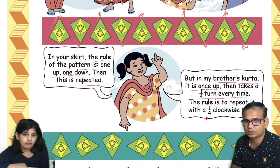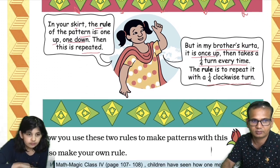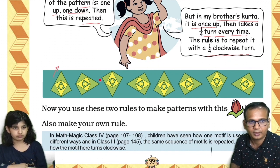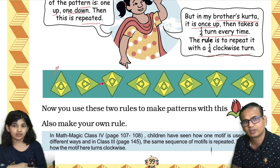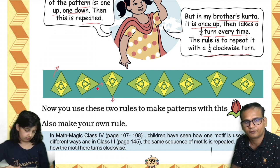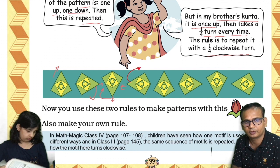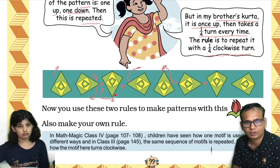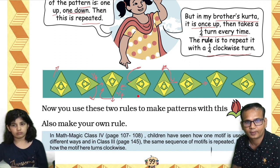The rule is to repeat it with a quarter clockwise turn. Just for example, this is the one right pattern — this is up — but then this quarter turn right, Avisha, then another quarter turn, and from here to here it is turned, then again from here to here it is turned. This is a quarter turn — one fourth turn, one fourth turn — and everything is one fourth turn, right?